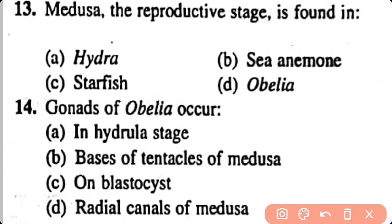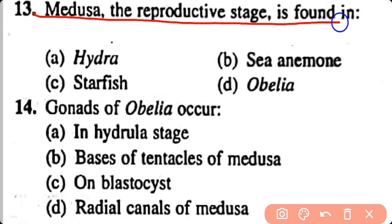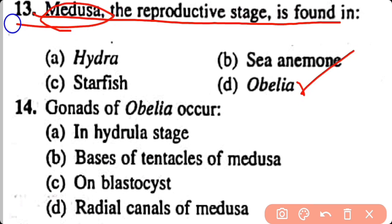Question number 13. Medusa, the reproductive stage, is found in: Hydra, Sea Anemone, Starfish, Obelia. Correct answer is option D. Medusa, the reproductive stage, is found in Obelia.